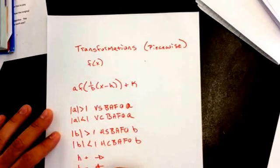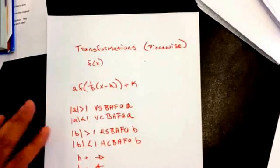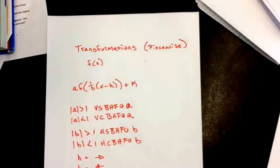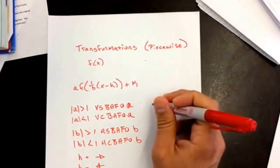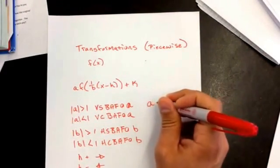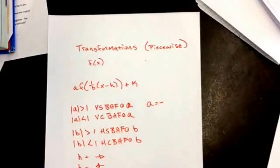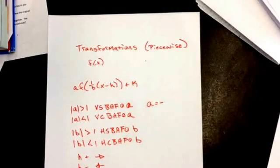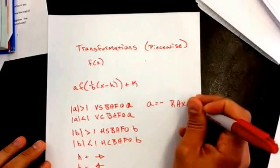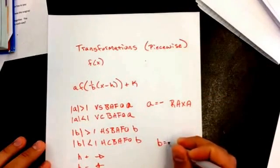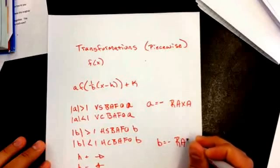And then k, when k is positive, it's going to go up, and when k is negative, it's going to go down. So that's what we're looking at on these ones. We're doing all of those pieces in there. And then, the last thing that we need is, if a is a negative value, we're going to reflect across the x-axis. And then, if b is a negative value, we're going to reflect across the y-axis.